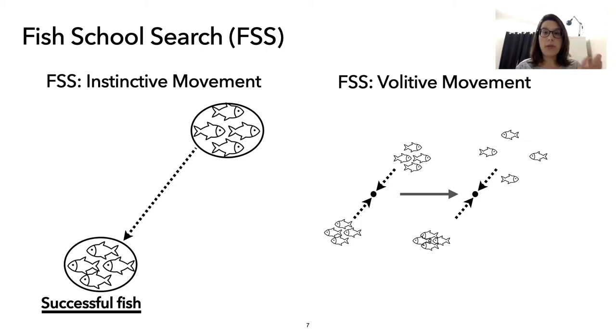So in the first movement, the fish will be attracted to the regions that the successful fish are searching. On the second movement, the volative, they will be able to expand and to contract. But based on the entire swarm, based on what the swarm is trying to find on how successful the entire swarm is over iterations.